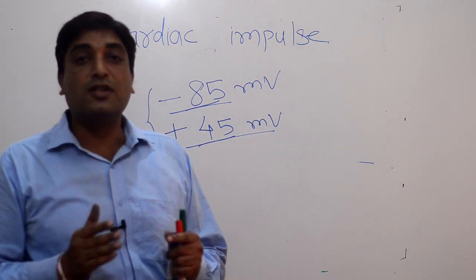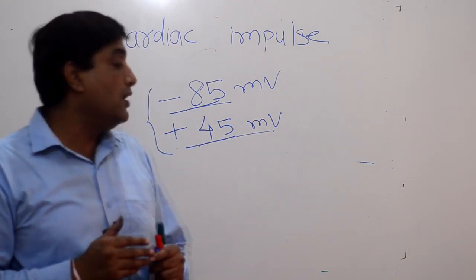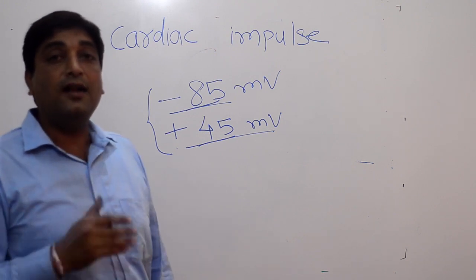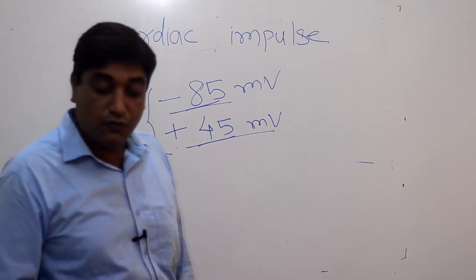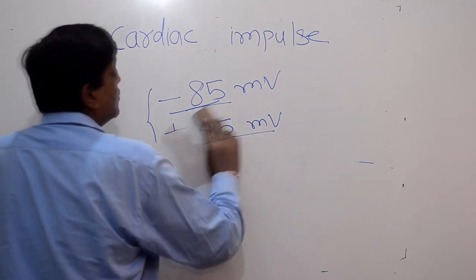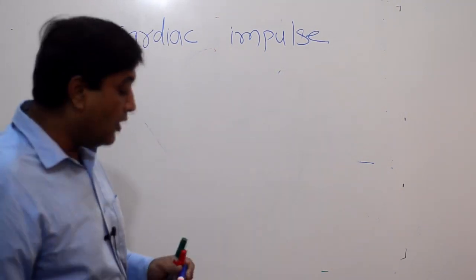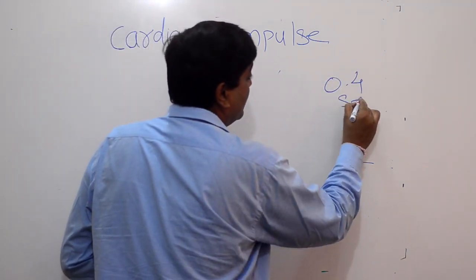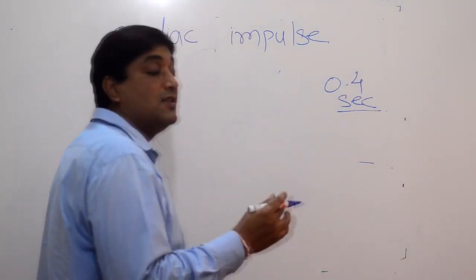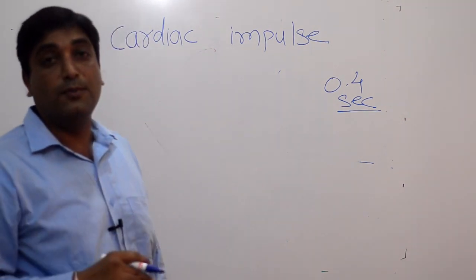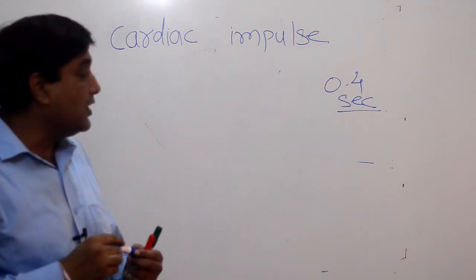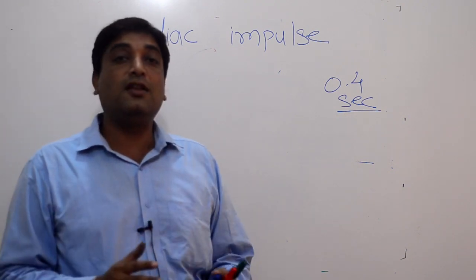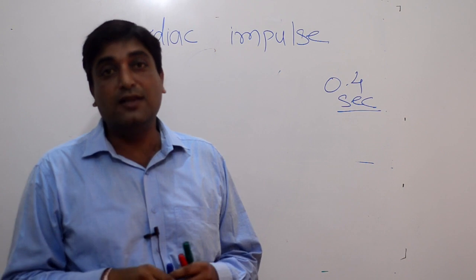The cardiac impulse is pretty long — it is almost 0.4 seconds. It is pretty different from the neuronal cell and the skeletal muscle cell which we have seen in earlier videos. The precise duration of our cardiac impulse is around 0.4 seconds, which involves both systolic and diastolic activity. To understand it better, we need to distribute it in a phase-wise manner.